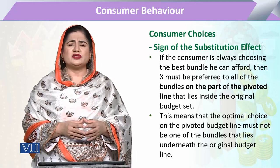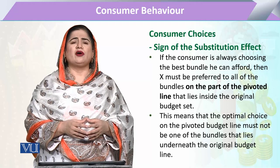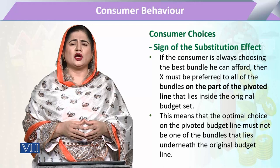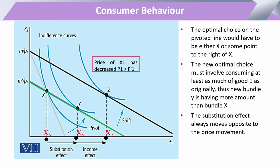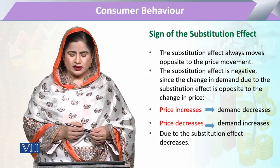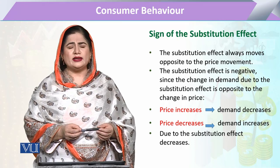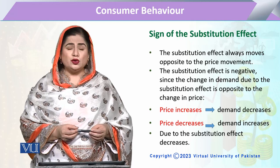The positive sign of the substitution effect will be used in calculating the total effect when we compute the change in quantity demanded due to a change in price. This diagram shows that with the decrease in the price of X1, the new optimal bundle must involve the previous amount of X1 plus some additional amount. So bundle Y will have at least the previous amount of X1 and some added quantity. The substitution effect moves opposite to the price movement, giving it a non-positive own-price effect — if price increases, demand decreases, and if price decreases, demand increases due to the substitution effect.